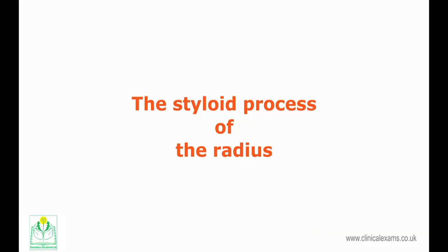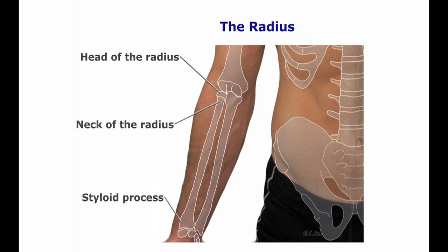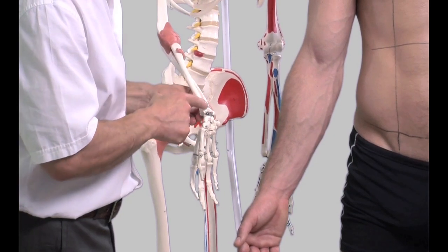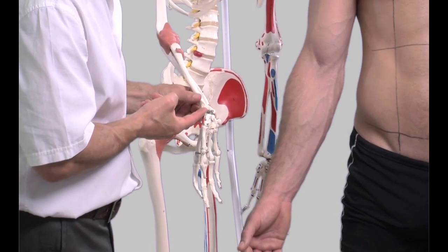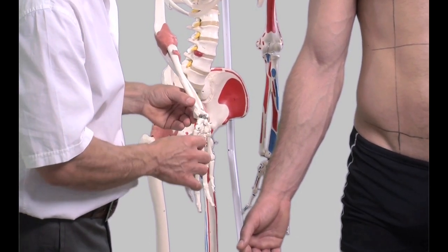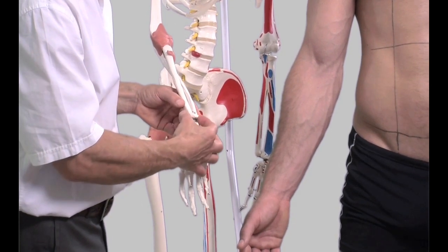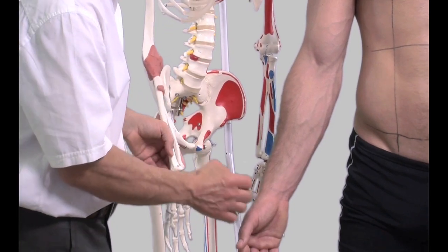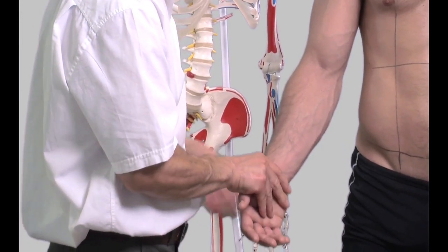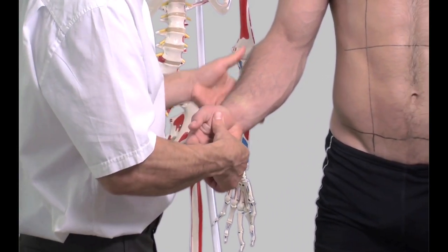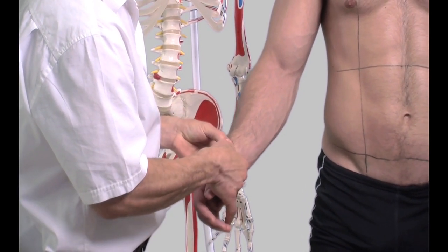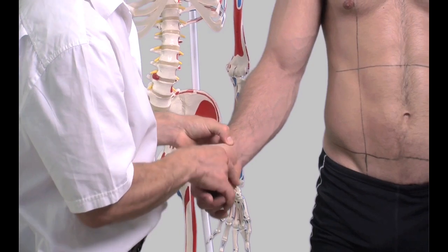The styloid process of the radius is located on the lateral aspect of the distal radius. It extends obliquely downwards as a conical projection, and is much wider than its ulnar counterpart. Part of this projection is covered by the brachioradialis muscle. It can be tender due to the presence of the superficial branches of the radial nerve.